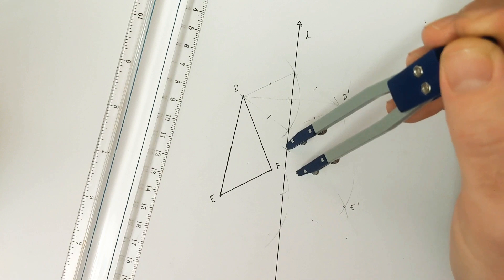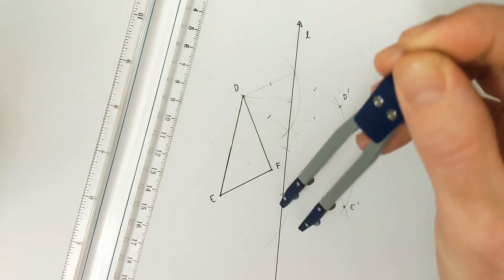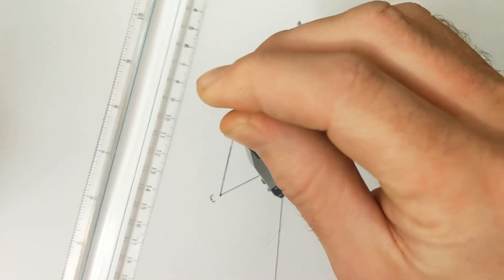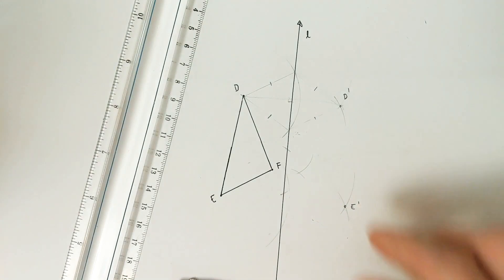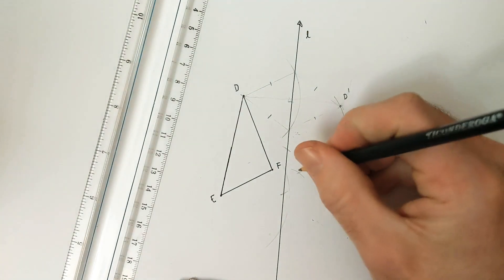And then flip it around. Arc. Same radius. Arc. And intersection. Here's our point F prime.